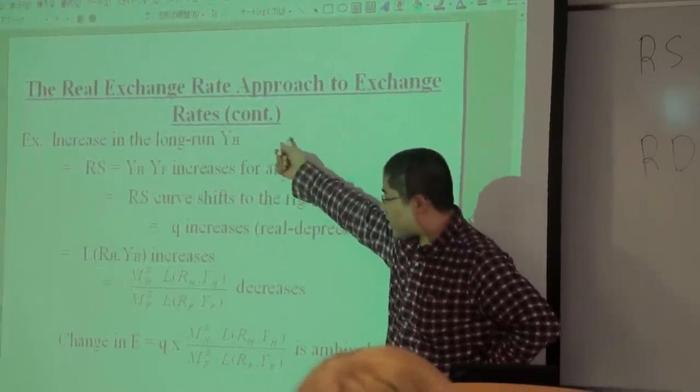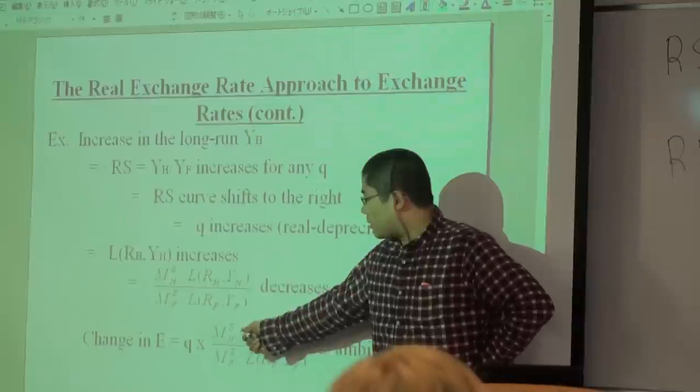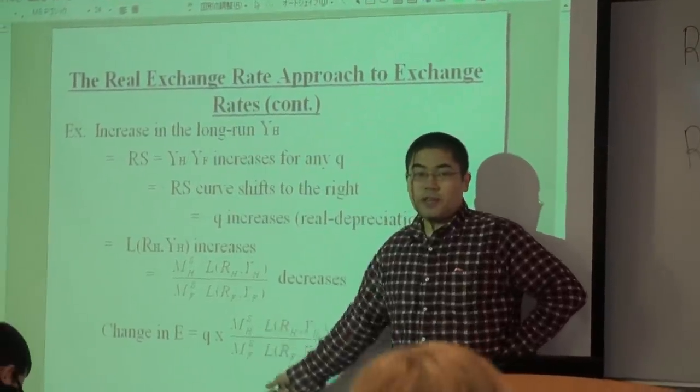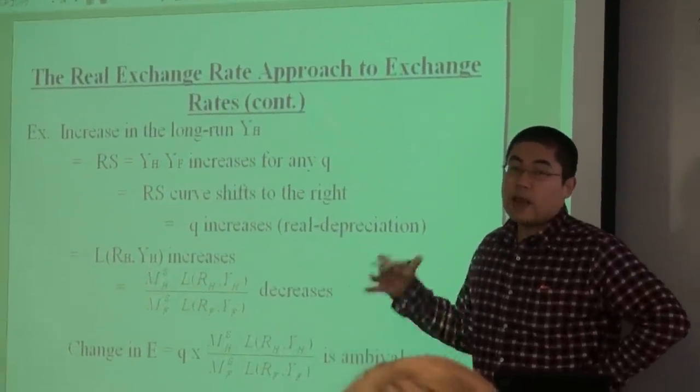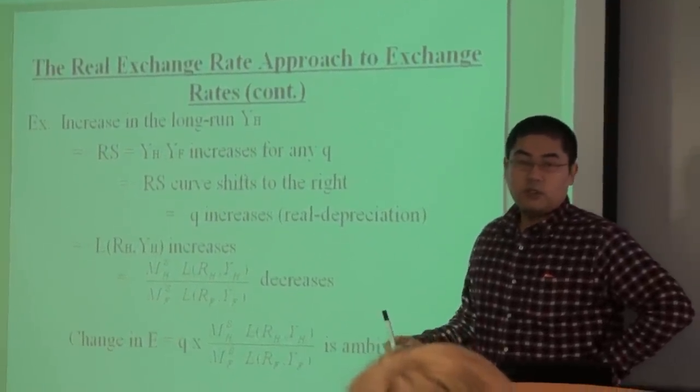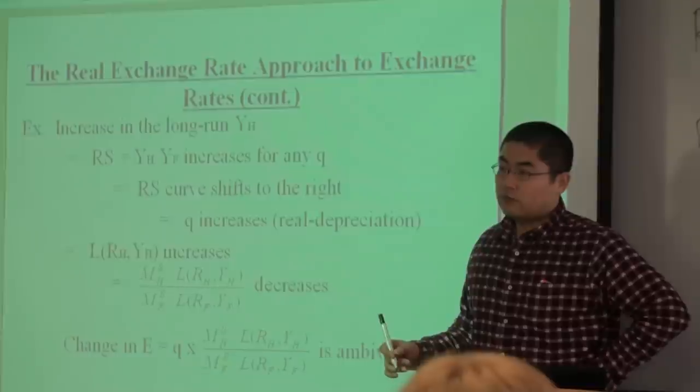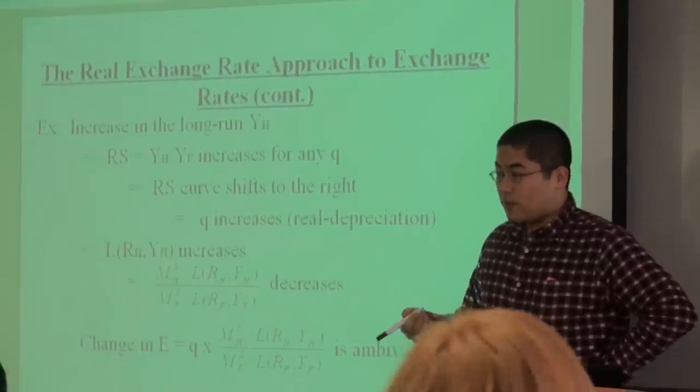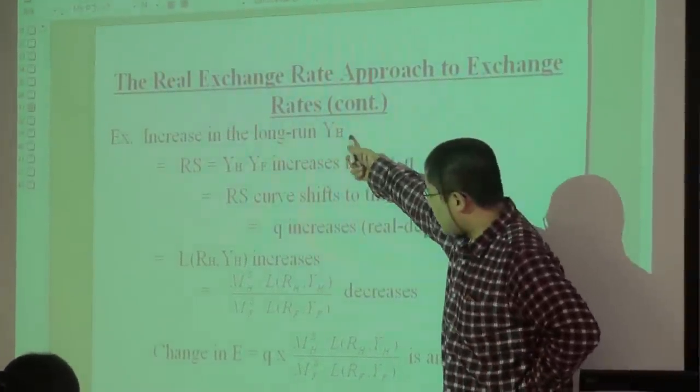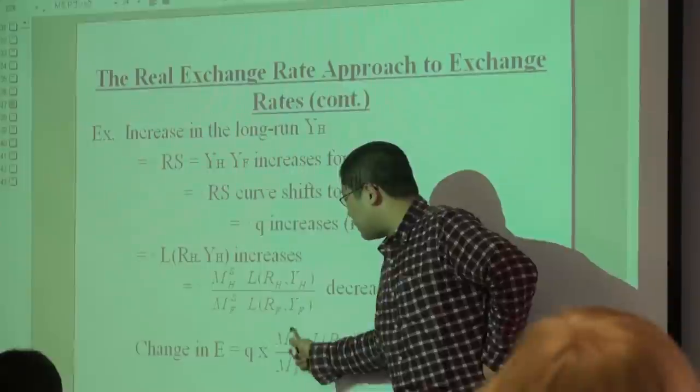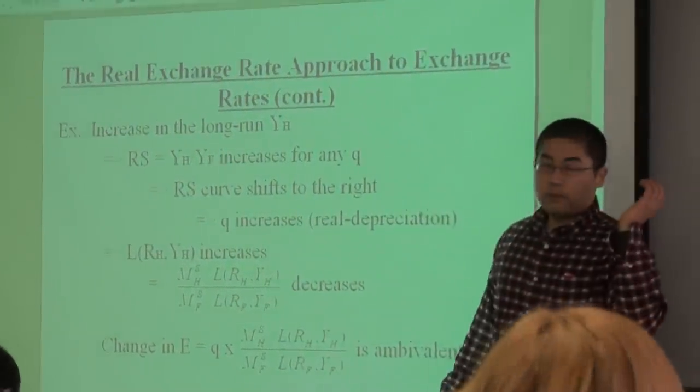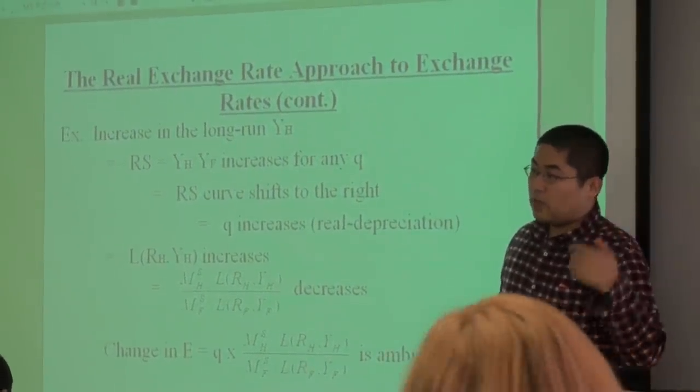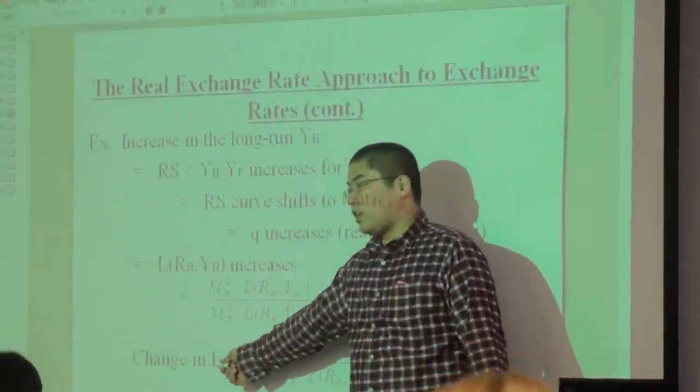In this case, if the central bank increases or decreases money supply, then we can tell that we have a definite direction. Do you understand what I mean? In this case, increasing yh increases q but decreases this monetary size. So, opposite direction. Because of that, we cannot tell how nominal exchange rate changes.